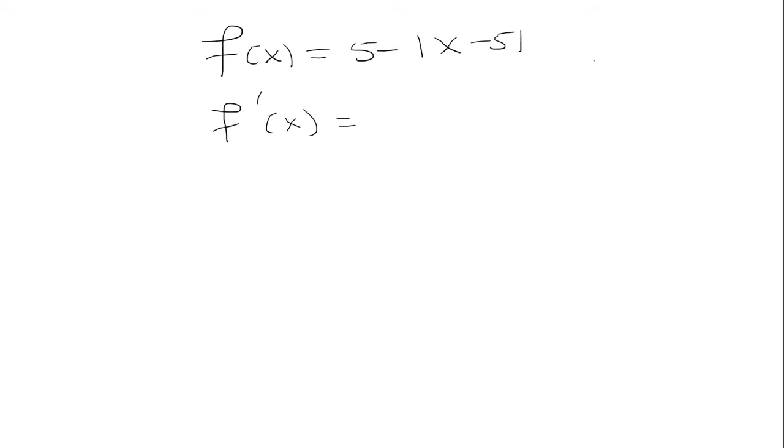In general, if I have an absolute value of u, the derivative is u over absolute value of u times du.